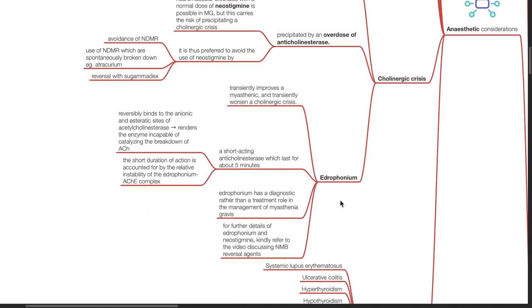Edrophonium. This is a drug that transiently improves a myasthenic but transiently worsens a cholinergic crisis. Edrophonium is a short-acting anticholinesterase which lasts for about 5 minutes and reversibly binds to the anionic and esteratic sites of acetylcholinesterase and renders the enzyme incapable of catalyzing the breakdown of acetylcholine. The short duration of action is accounted for by the relative instability of edrophonium-acetylcholinesterase complex. Edrophonium has a diagnostic rather than a treatment role in the management of myasthenia gravis.